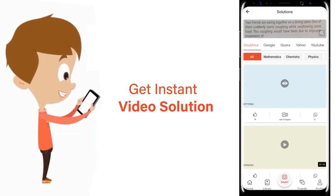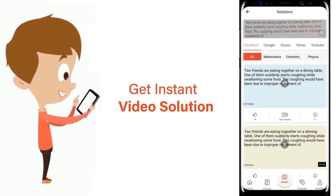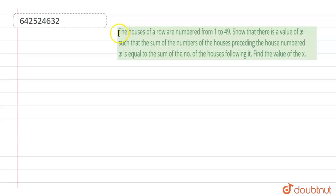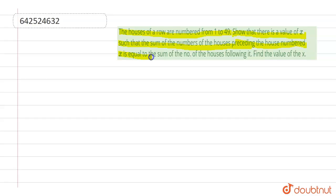Our question is: the houses of a row are numbered from 1 to 49, so that there is a value of x such that the sum of the numbers of the houses preceding the house numbered x is equal to the sum of the numbers of the houses following it. We have to find the value of x.